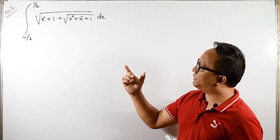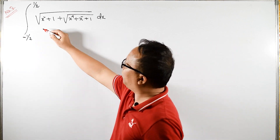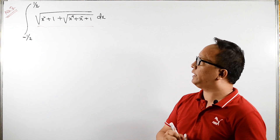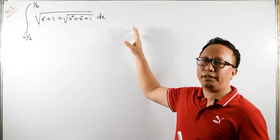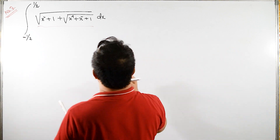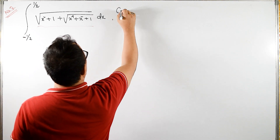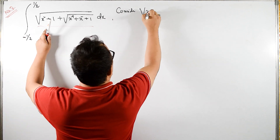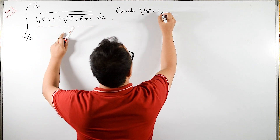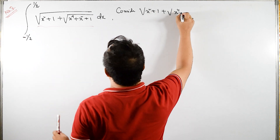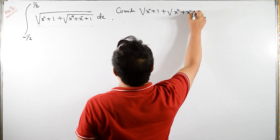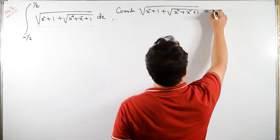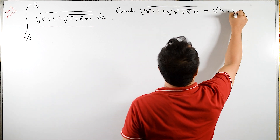Welcome back. For this integral, I will consider the whole D equals square root of A plus square root of B, and we will find A and B in terms of x. So let us consider square root of x² + 1 plus square root of x⁴ + x² + 1 equals square root of A plus square root of B.